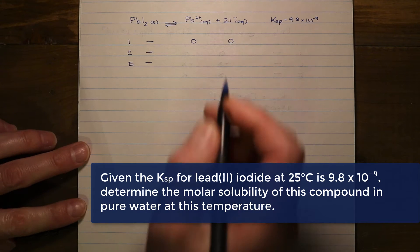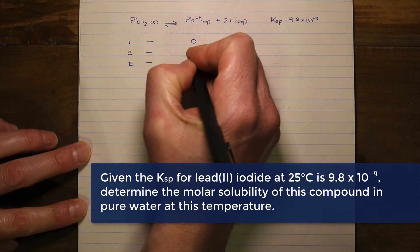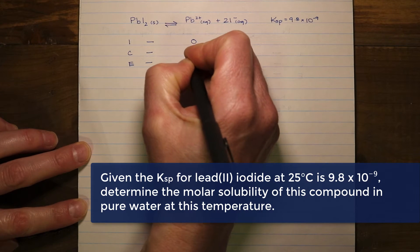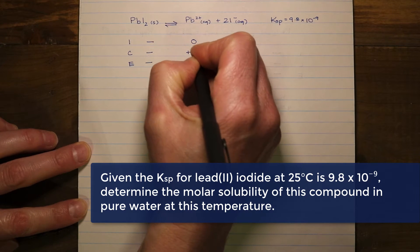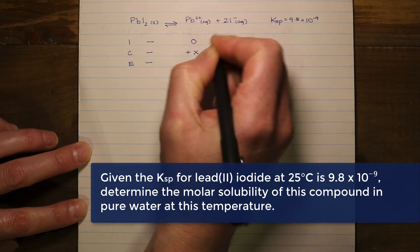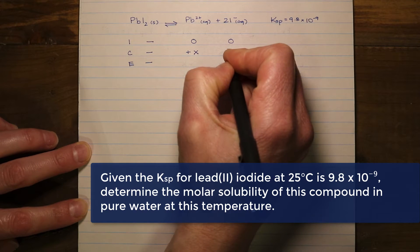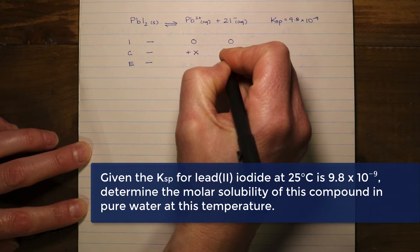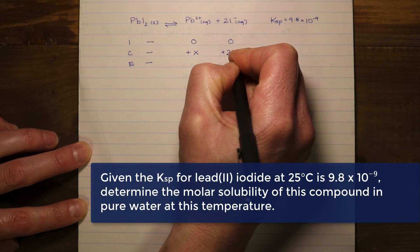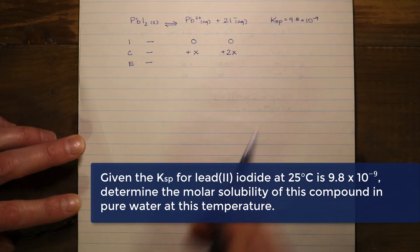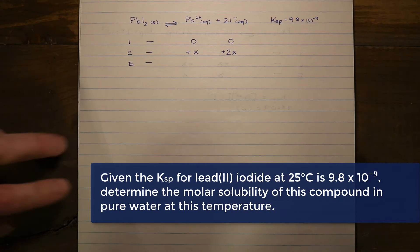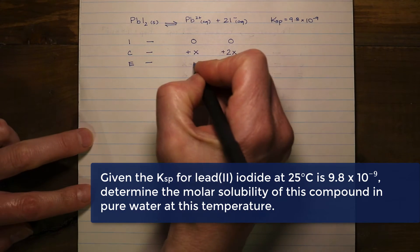Based on the coefficients, the lead ion is going to increase by some factor x, and the iodide ion is going to increase by 2x. Therefore, our equilibrium values are going to be x and 2x respectively.